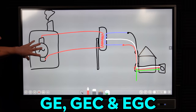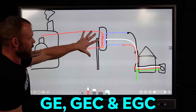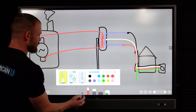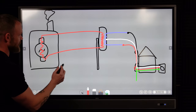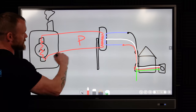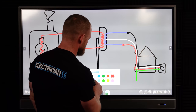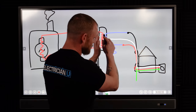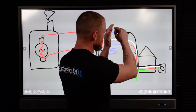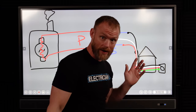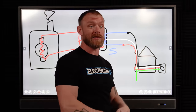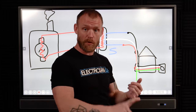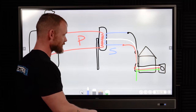Looking more closely: we have an industrial generator, a transformer on a pole, and a house. On the primary side we have one complete circuit; on the secondary side we have a complete circuit from the transformer through the equipment and back. Current only travels if there is a completed loop, and the only way to stop current is by opening the circuit — that's why we have breakers, switches, and disconnects.